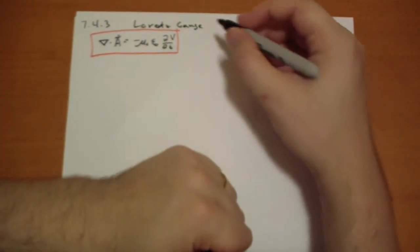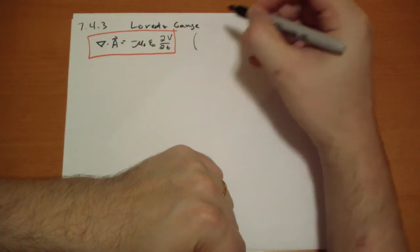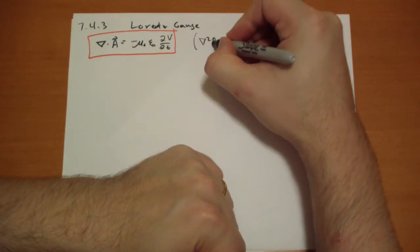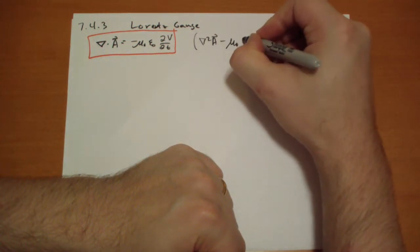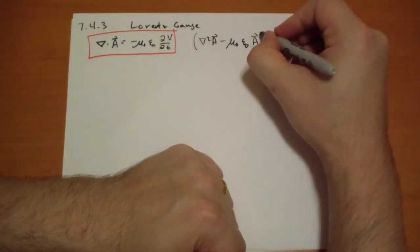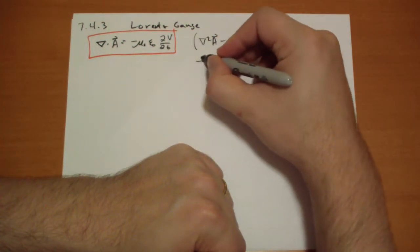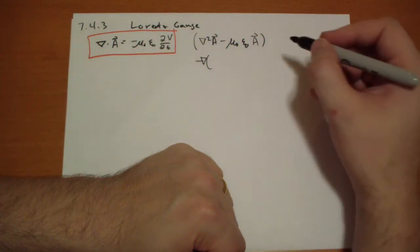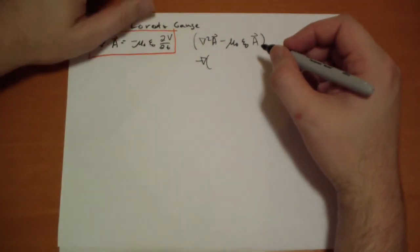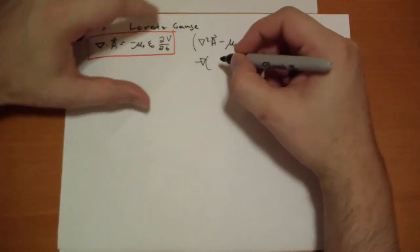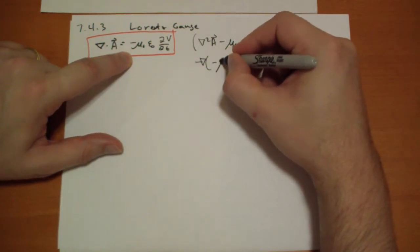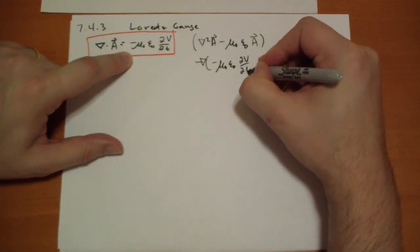So we get the Laplacian of A vector minus the gradient of the divergence of A, which is set to be minus mu naught epsilon naught dV by dt.